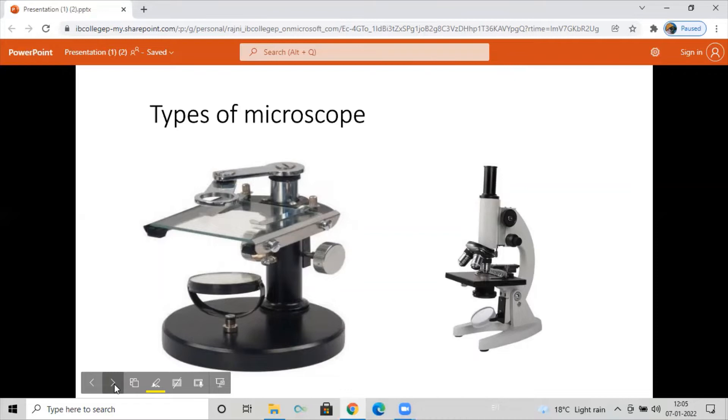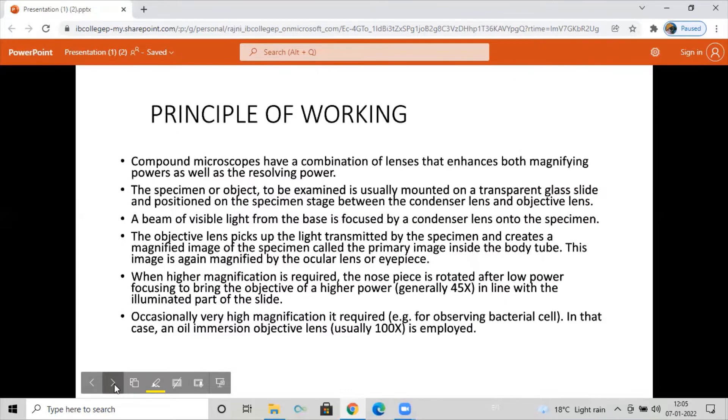Now what is the principle behind the working of compound microscope? Compound microscopes have a combination of lenses that enhances both magnifying power as well as resolving power. The specimen or object to be examined is usually mounted on a transparent glass slide and positioned on the specimen stage between the condenser lens and objective lens.